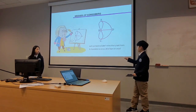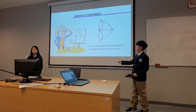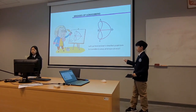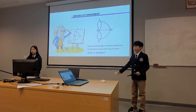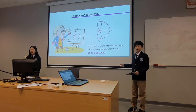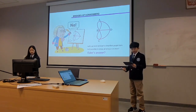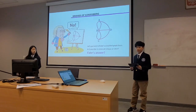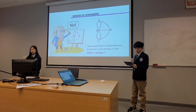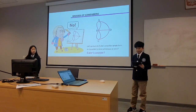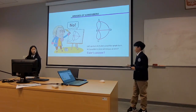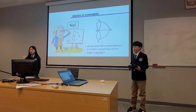Let's go back to Euler's simplified graph form. Is it possible to cross all bridges at once? Euler's answer: No. Why can't we draw a linear graph of the Königsberg bridge problem in one brush drawing? According to Euler, the Königsberg bridge problem became a problem of single brush drawing. Let's find out more about Euler and single brush drawing.